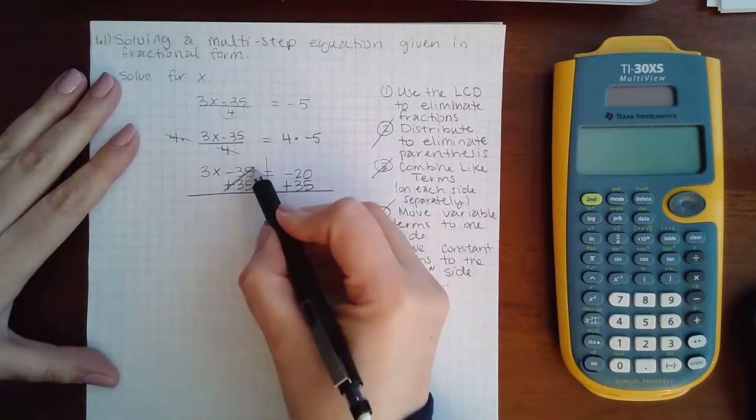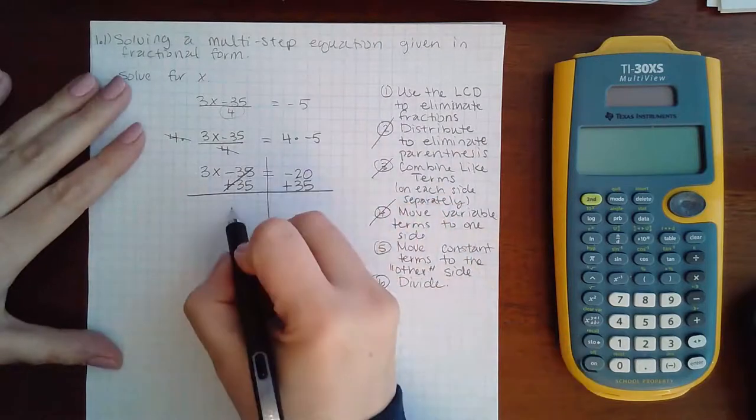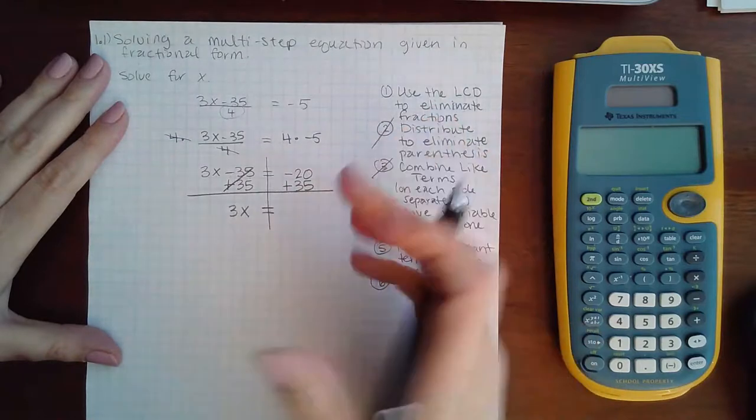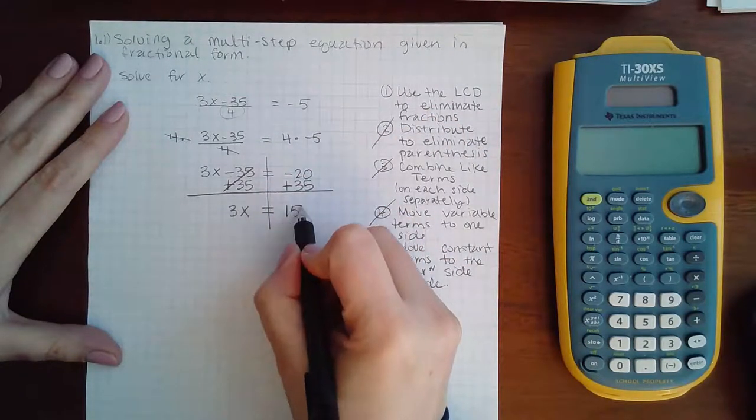So then negative 35 and 35 make zero. So there's no more constants on this left side. Now on the right side, negative 20 plus 35 is actually a positive 15.